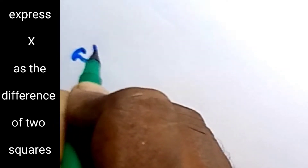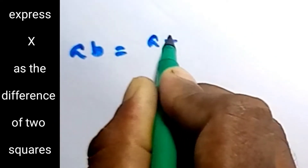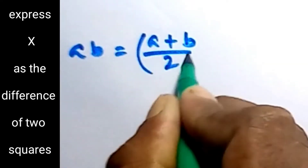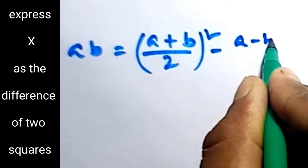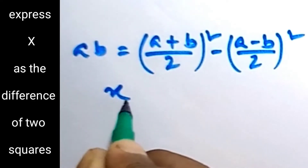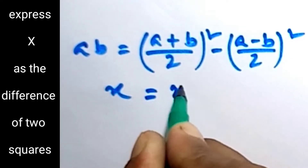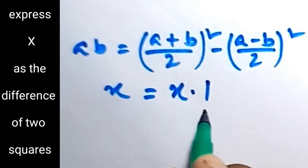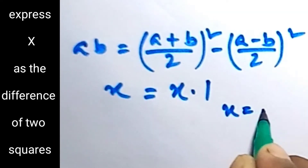ab is equal to — we can write ab as (a+b)/2 square minus (a-b)/2 square. x is equal to we can write x plus x into 1, so here x is equal to a and 1 is equal to b.